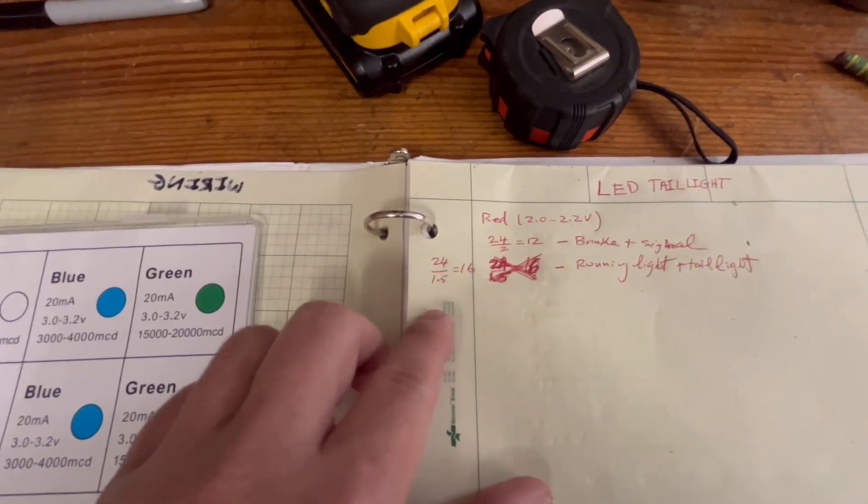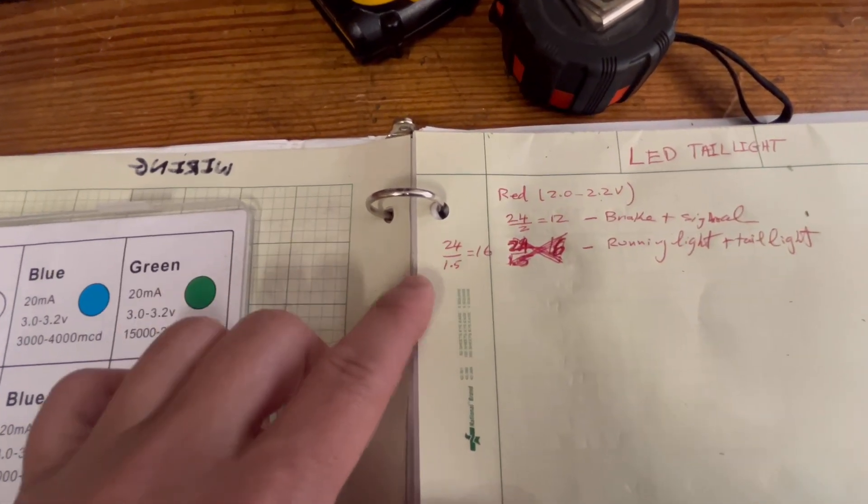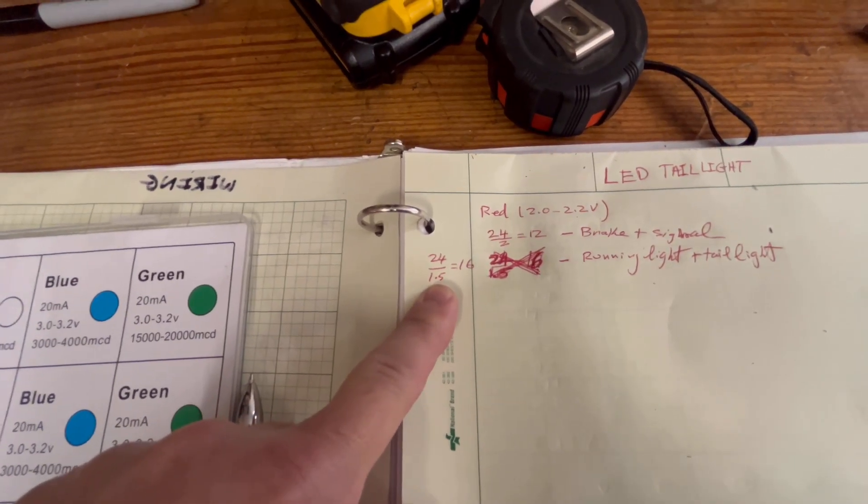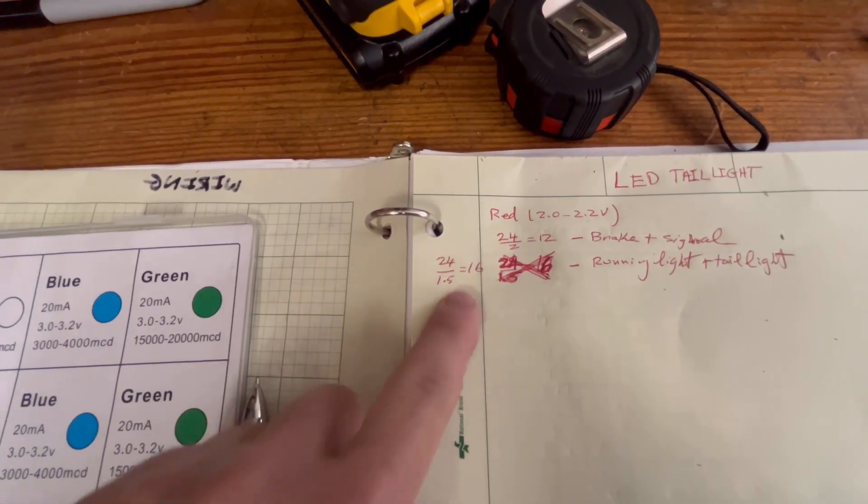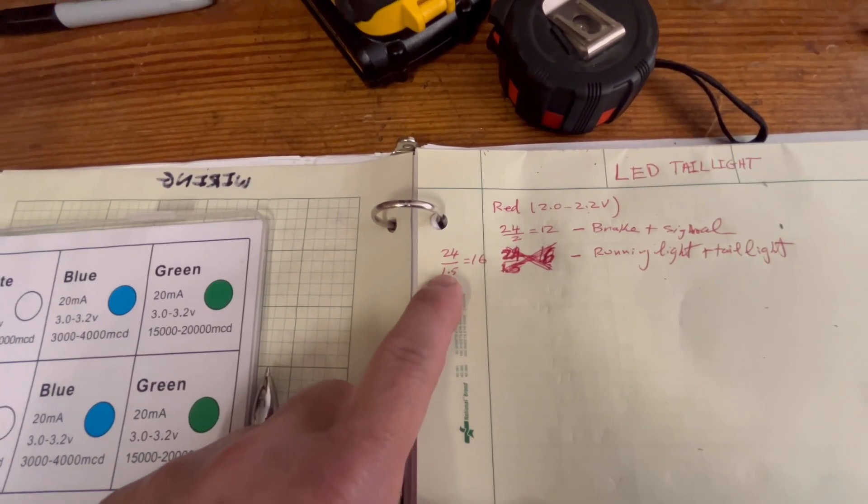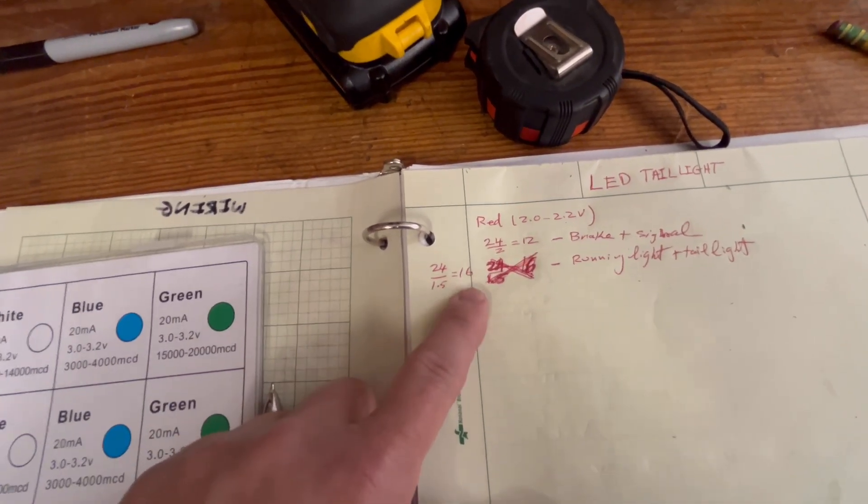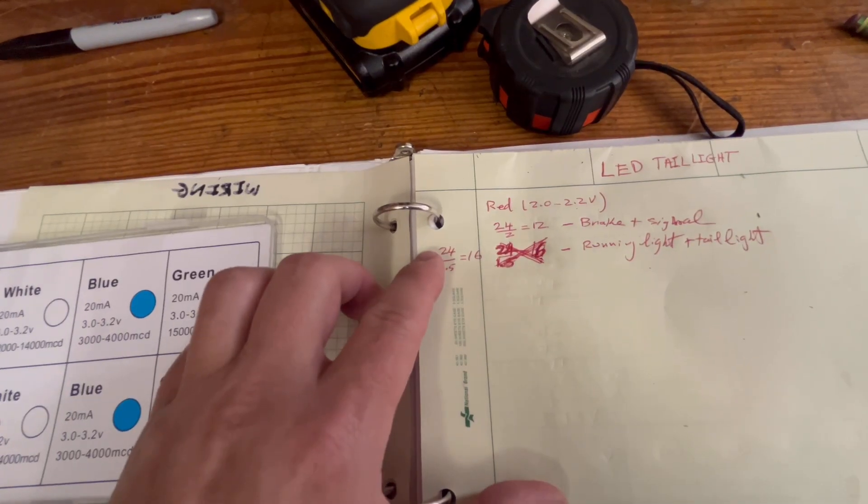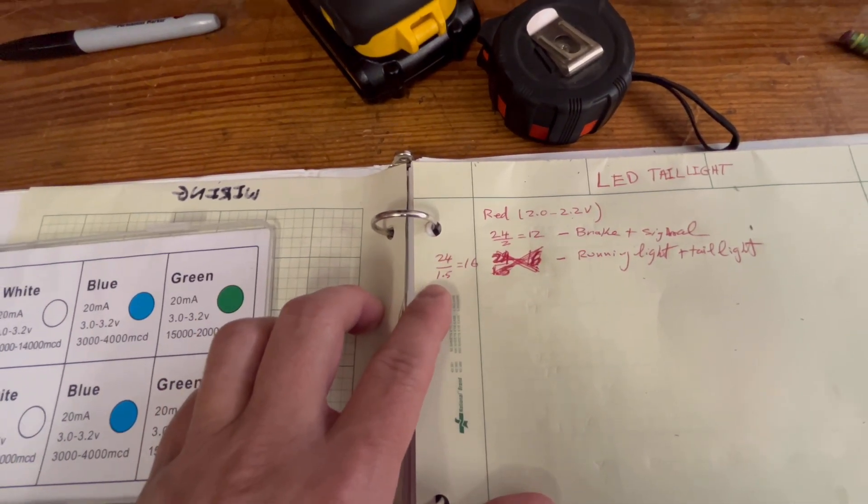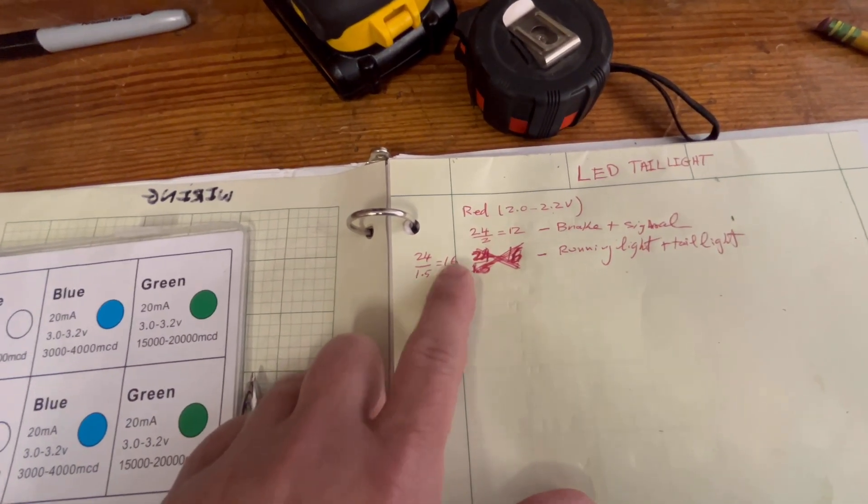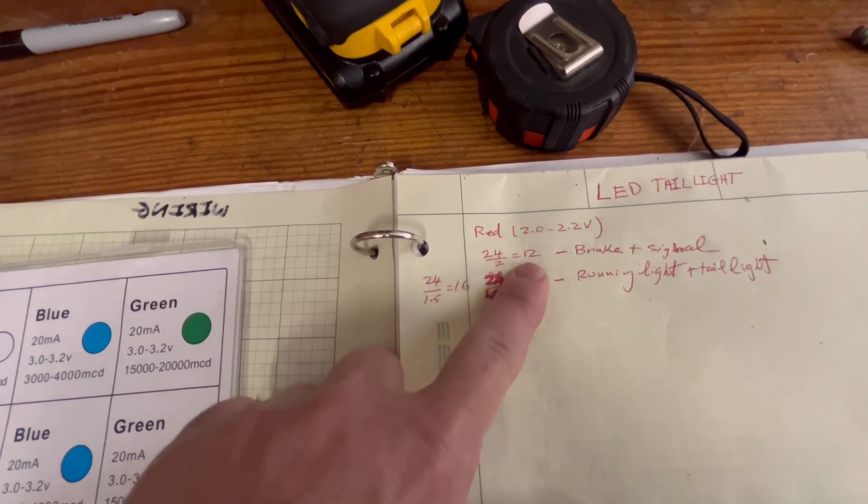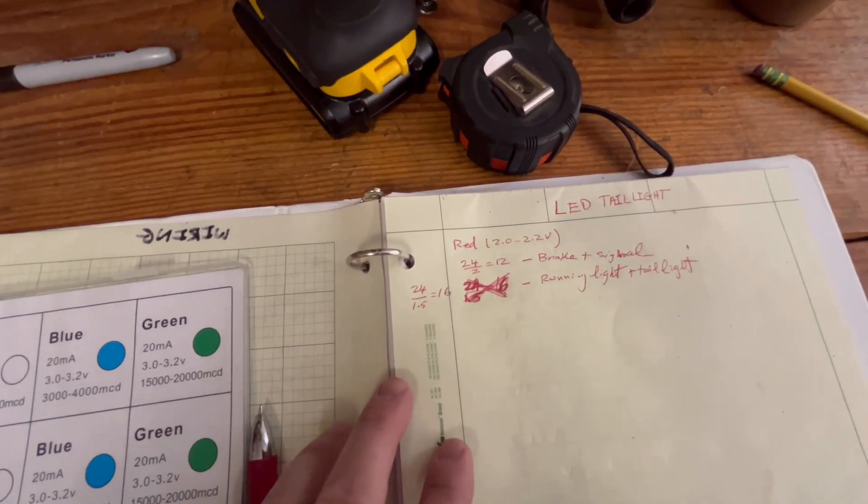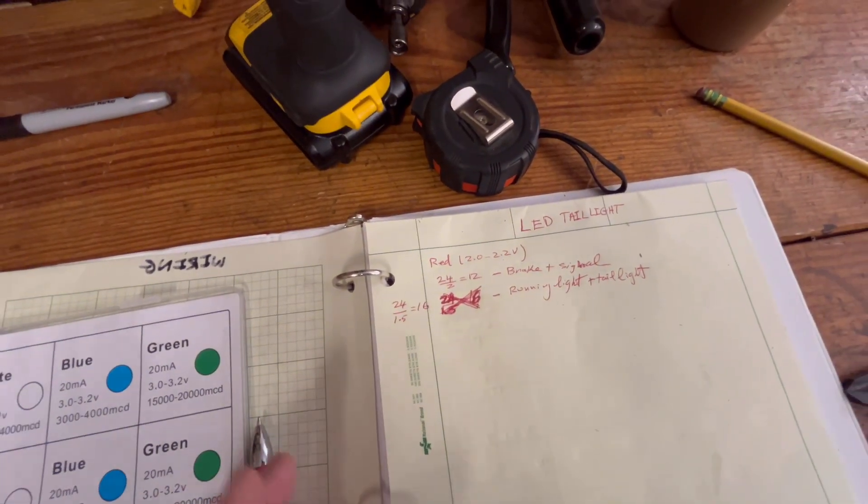So I want the running light and the tail light to be dimmer than the brake and the signal light. So you see what I did here was even though it's rated at 2 volts, I want to feed it with 1.5 volts. So that means it's going to be dimmer than the 2 volts because 1.5 is less. So I take 24 divided by 1.5, I got 16. So for me to get 24 volt rating, I need to have 16 of these red ones hooked up in series instead of 12.